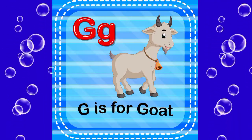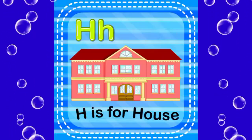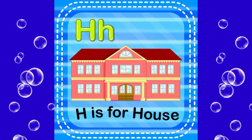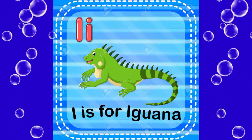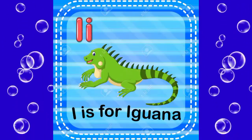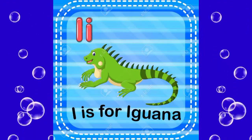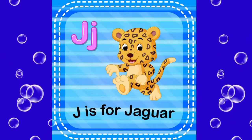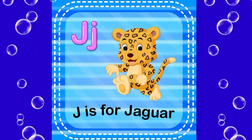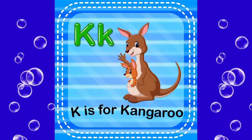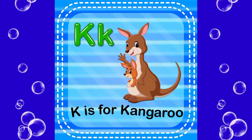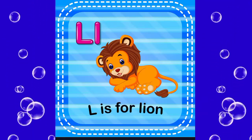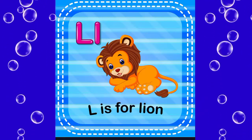G is for goat, H is for house, I is for iguana, J is for jaguar, K is for kangaroo, L is for lion.